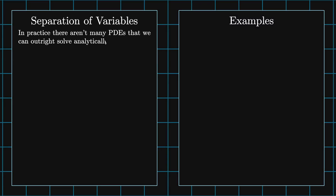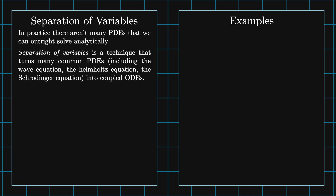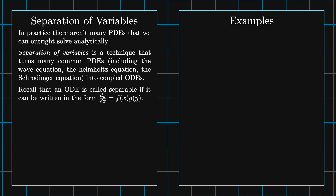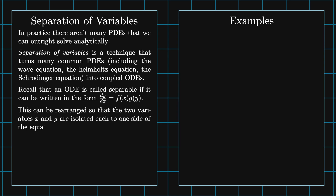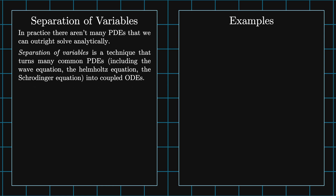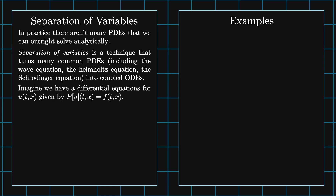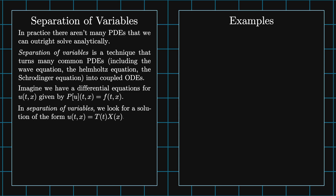In practice, there aren't many PDEs that we can outright solve analytically. Separation of variables is a technique that turns many common PDEs into coupled ODEs. Recall that an ODE is called separable if it can be written in the form dy/dx equals f of x times g of y. This can be rearranged so that the two variables x and y are each isolated to one side of the equation: dy divided by g of y equals f of x times dx. Imagine we have a differential equation for u given by P of u of t and x equals f of t and x. For separation of variables, we try to find a solution of the form u of t and x equals T of t times X of x.